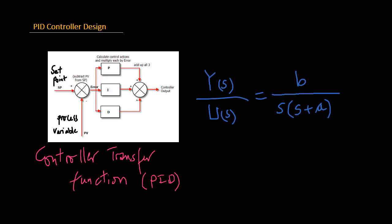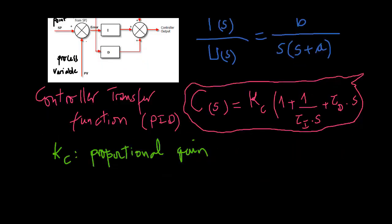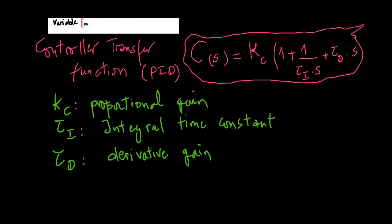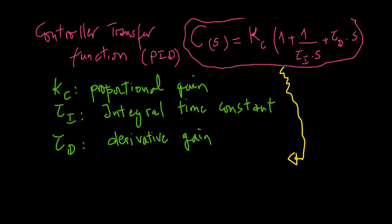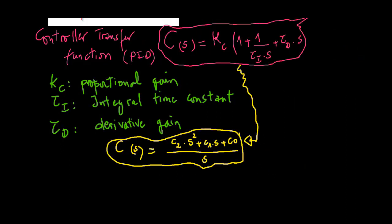An ideal PID controller has this transfer function. Kc is the proportional gain, tau i is the integral time constant, and tau d is the derivative gain. We re-write the PID controller given above into this transfer function form. By comparing both controller forms, we have this relationships.